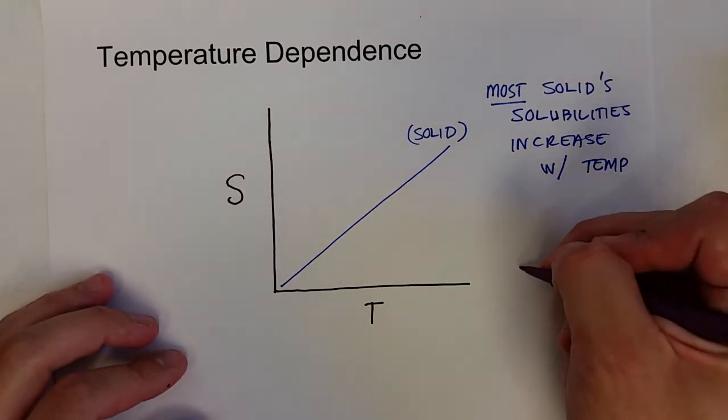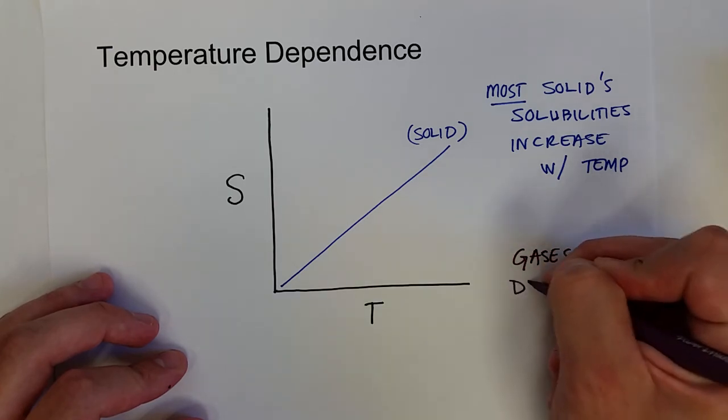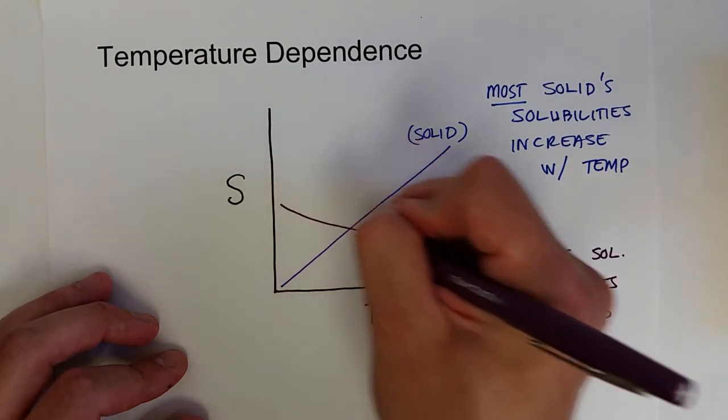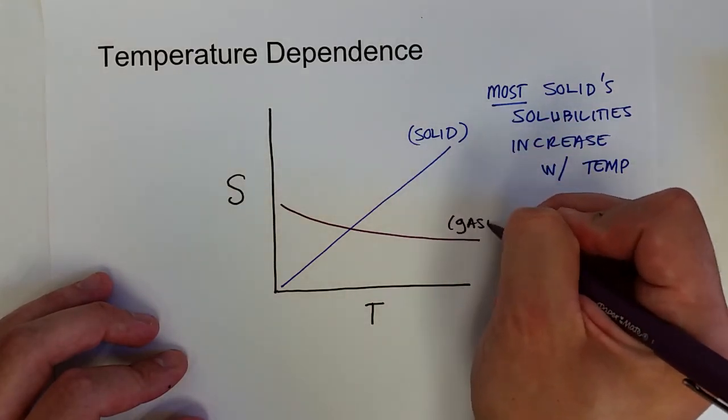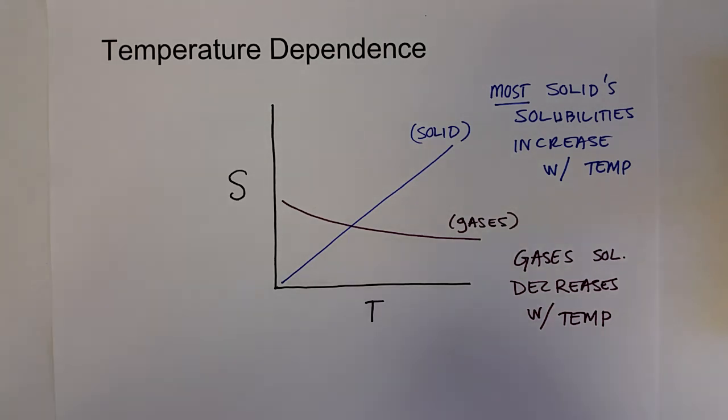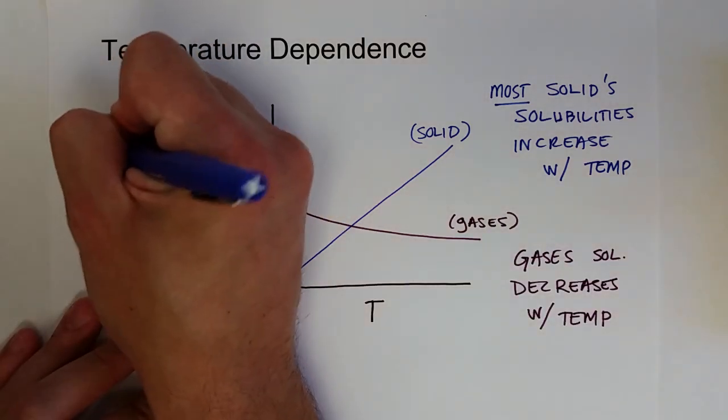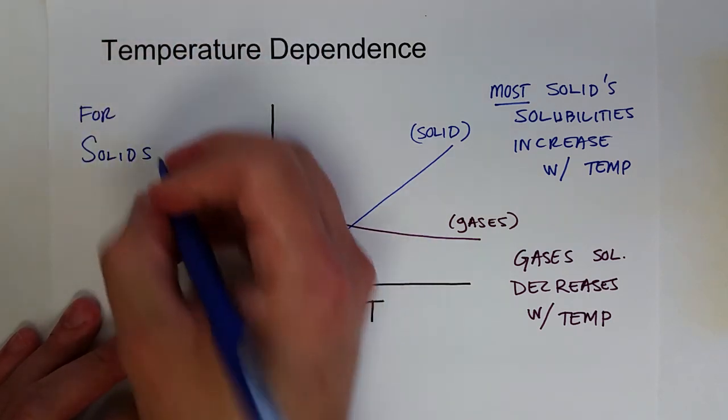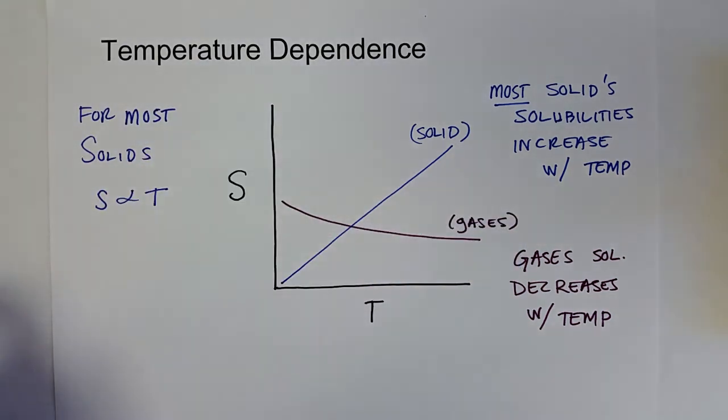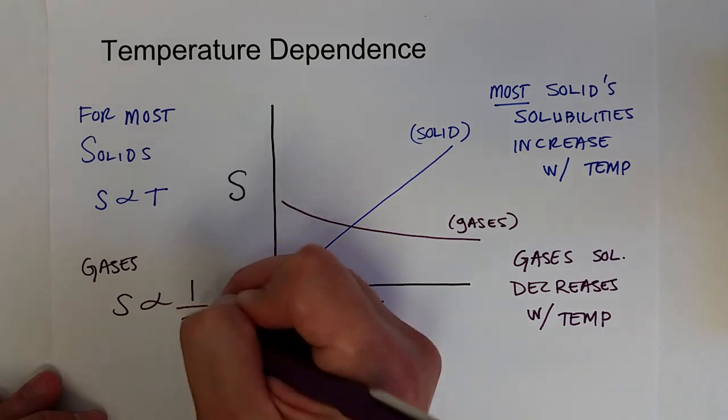For gases, gases solubility decreases with temperature. And so gases solubility curves look something like that. So the increasing temperature gives the gas molecules more kinetic energy, and so they're able to escape the solution. And so what we could say for most solids is that the solubility is proportional to temperature. For most solids, like sodium chloride or sugar, the solubility is proportional to temperature. But for gases, it's the opposite. And that's true for all gases, is that the solubility is inversely proportional to the temperature.